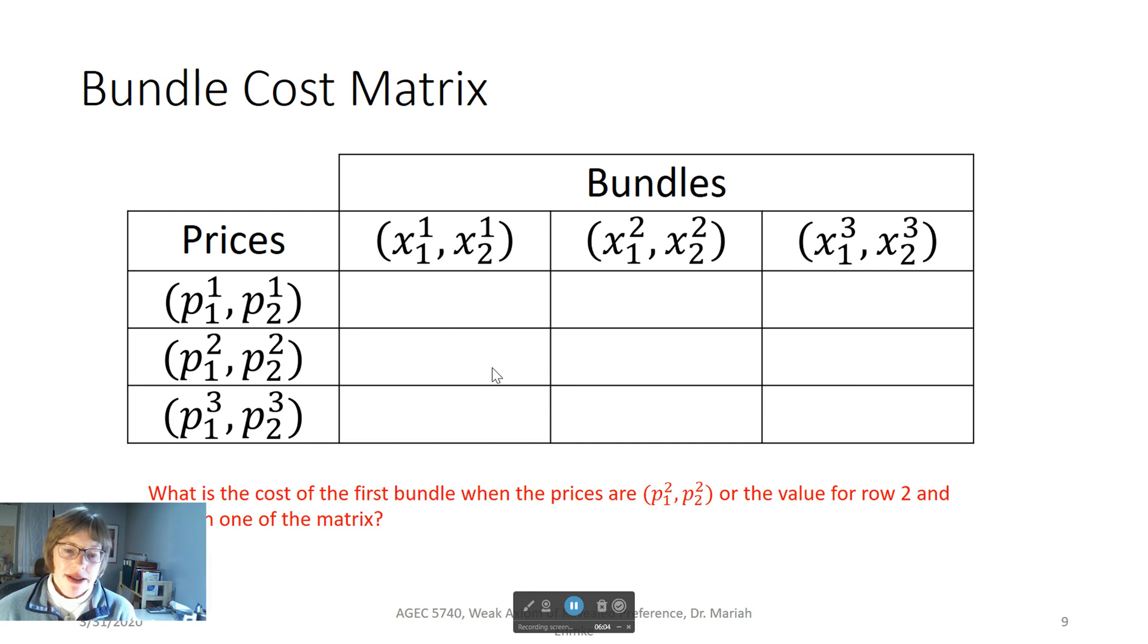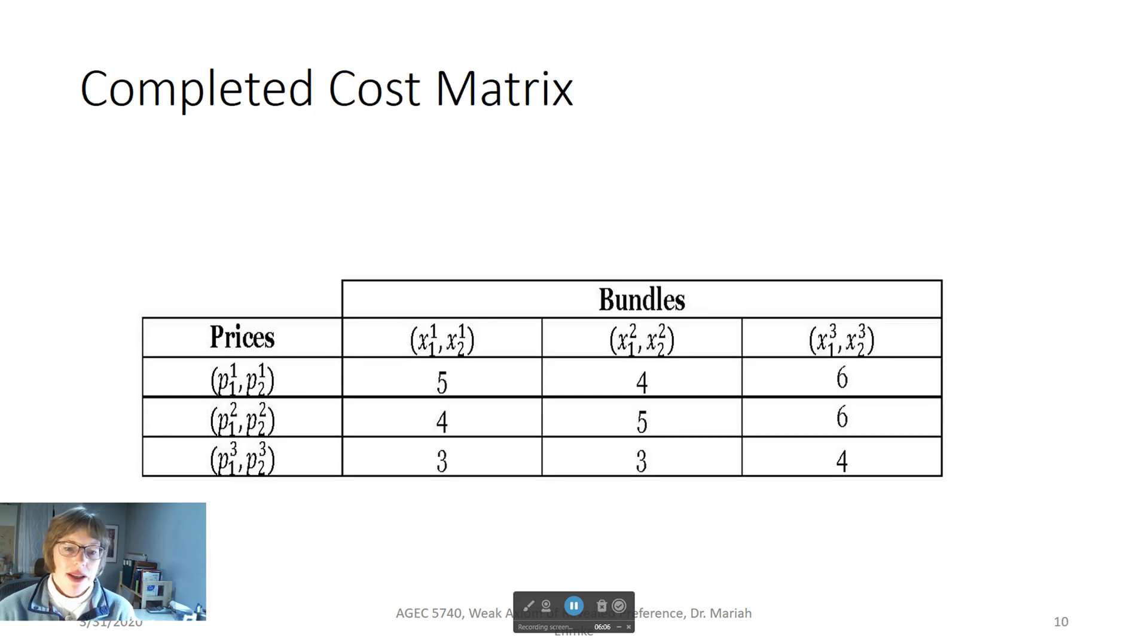If we fill in the rest of the matrix, we have one that is represented by Varian in table 7.2. I wanted to include that intermediate step so you are sure to follow the logic he went to from the first set of price and good choice information to this final matrix.